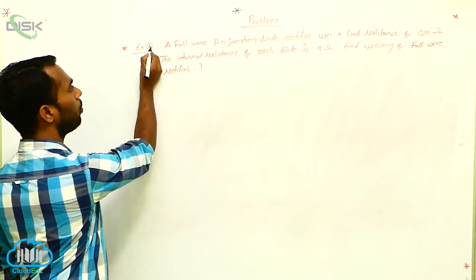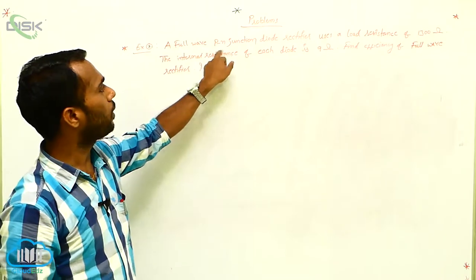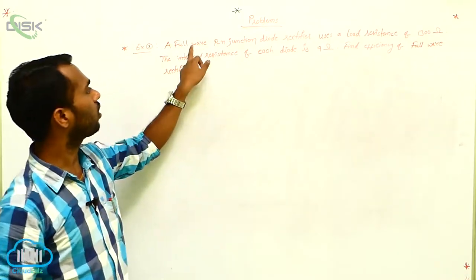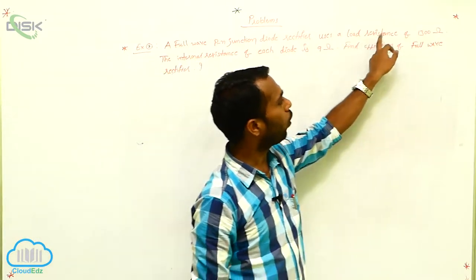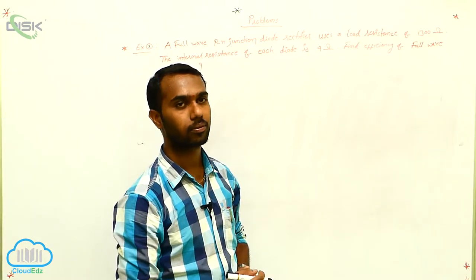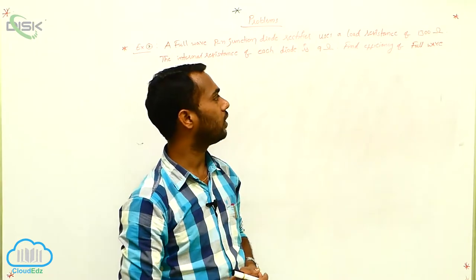Next, we have to check another problem, problem number 2. What we have? A full wave PN junction diode rectifier. So, in this problem, we have to discuss about full wave. This rectifier uses a load resistance of 1300 ohms. So, the load resistance RL value given is 1300.